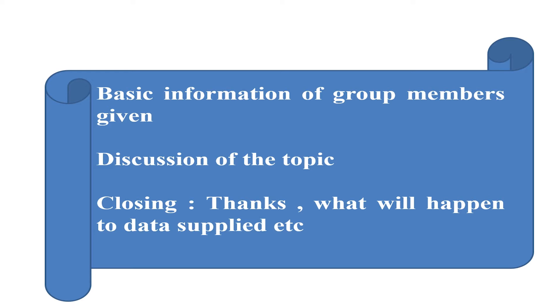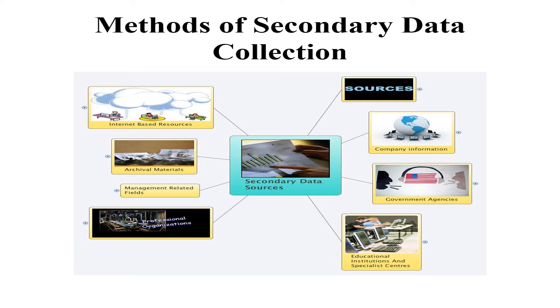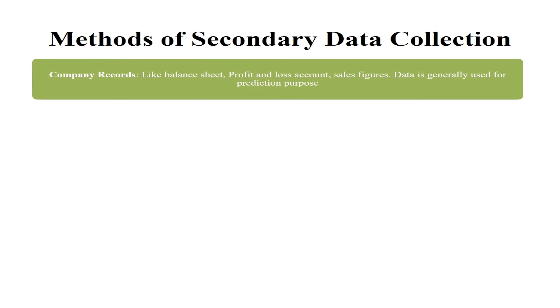After discussing the methods of primary data collection, let's now discuss the methods of secondary data collection. Secondary data may be collected through various sources. The first is company records like balance sheets, profit and loss accounts, sales figures, etc. Data is generally used for prediction purposes.